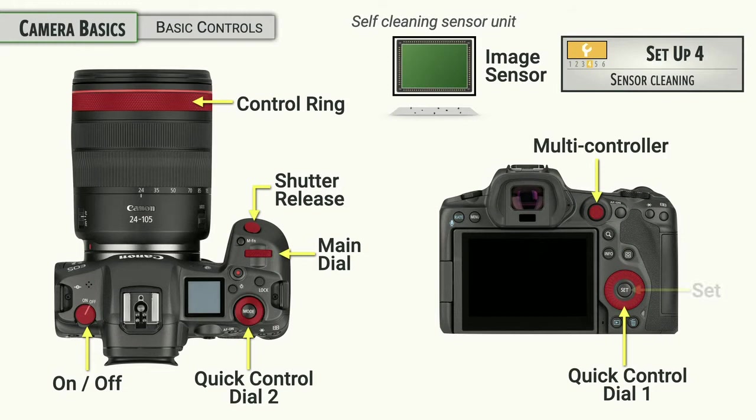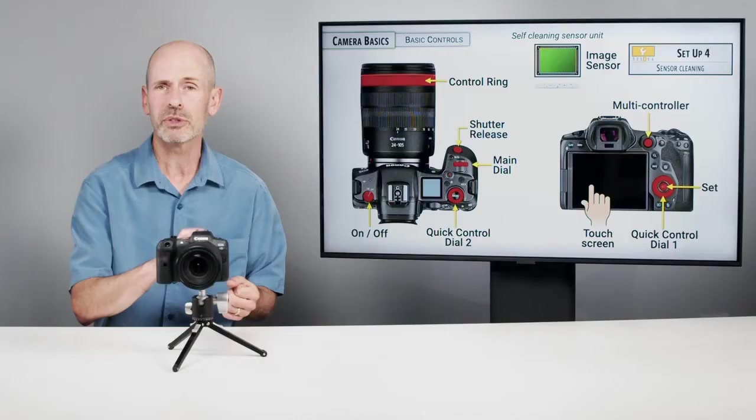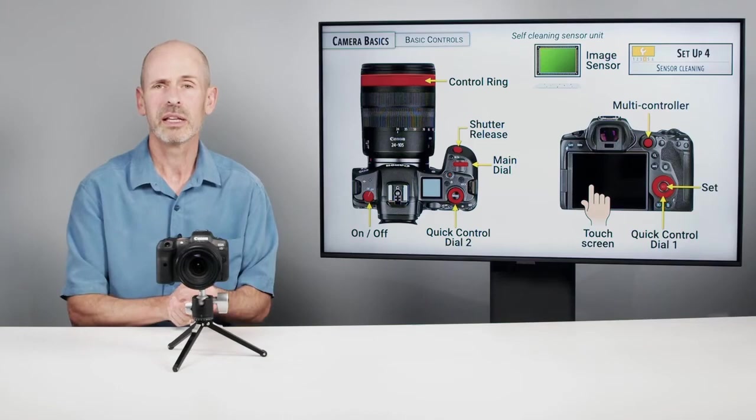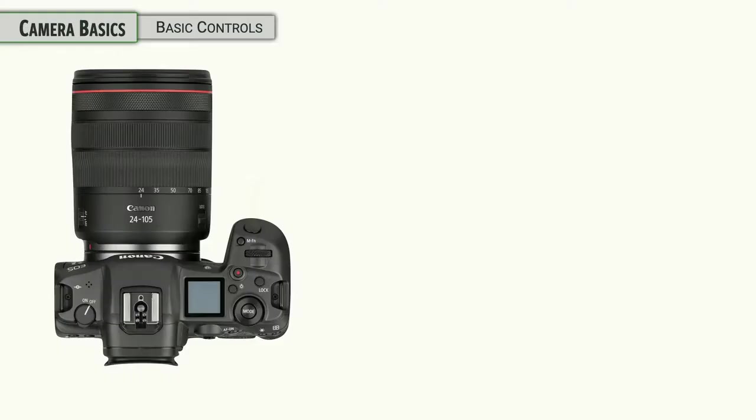The set button, like an OK button or a confirm or an enter button, we'll be using this when we highlight a particular feature we want and we want to confirm that as our particular setting. Now, the camera also has a touch screen and there's a lot of these controls that you can just do on the screen itself. And as we go through the class, I'll be highlighting the areas where the touch screen is a very good tool to use or offers unique advantages over using the actual buttons on the camera.